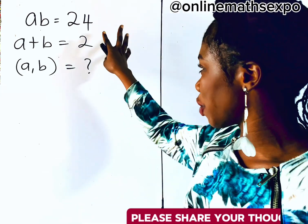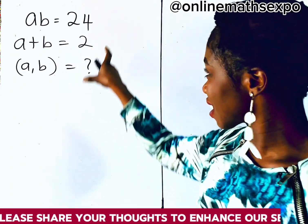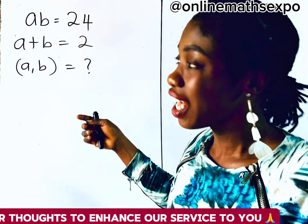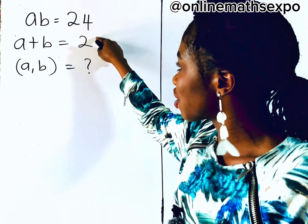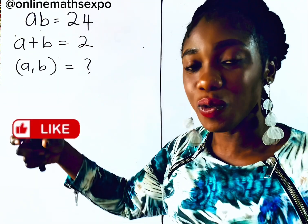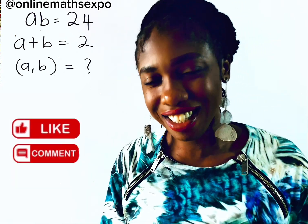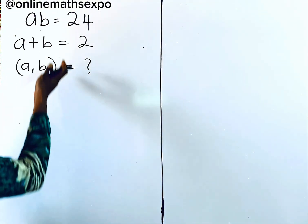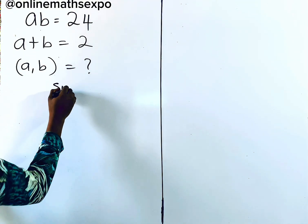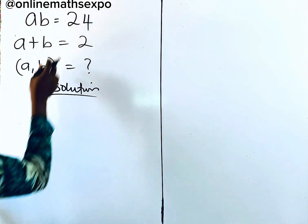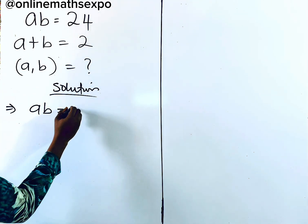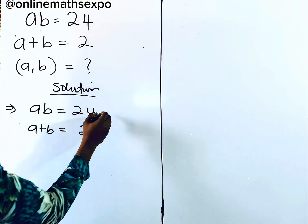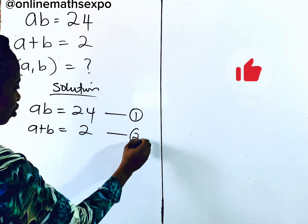Hello lovely one, let's solve this beautiful equation together. When you see this kind of equation, it is called a system of equations. We have two equations involving two variables. When you are solving such equations, just know you are solving a system of equations. So let's begin with the solution: we have ab = 24, and a + b = 2. We can call this equation 1 and equation 2.